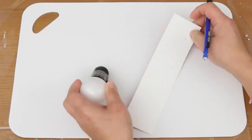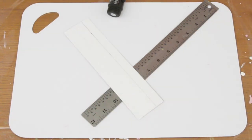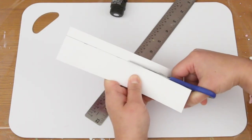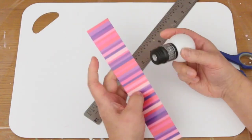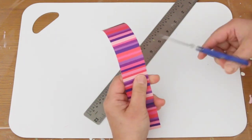Measure and cut. Wrap it around the bottom. Make sure it overlaps and cut.